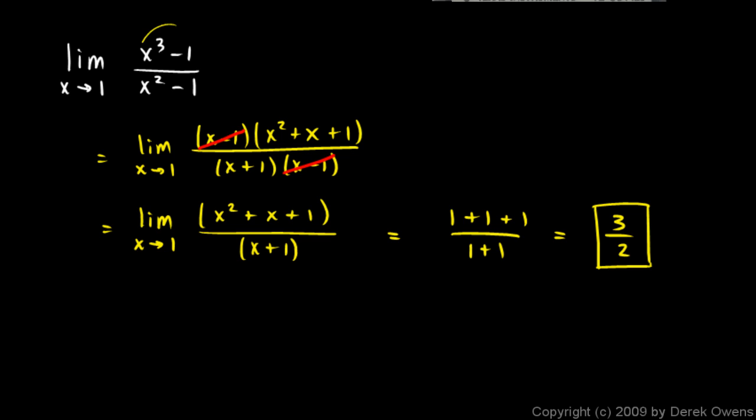And that's our answer. You could put this function into the calculator and hit trace and put in values very close to 1, and you'll get values out that are very close to 3 halves. You can't put in a value exactly 1 because this function is undefined at x equals 1, but you can get values as close as you want to 1, and when you do that the value of the function will get closer and closer to 3 halves. Thank you.